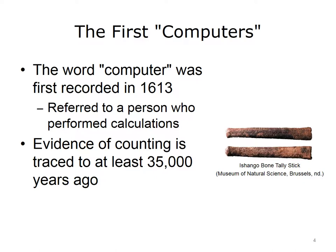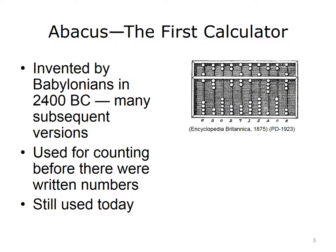Calculations have been performed by humans for many thousands of years. The earliest evidence of any sort of computation is the tally stick, from at least 35,000 years ago. Tally sticks are the first known tools man used to help with computations. The abacus is often considered to be the first calculator. It was invented by Babylonians in 2400 BC, and there have been many subsequent versions. Other versions were developed in Greece, China, Japan, the Roman Empire, and Russia. The abacus was used for counting and tracking amounts, even before there were written numbers.